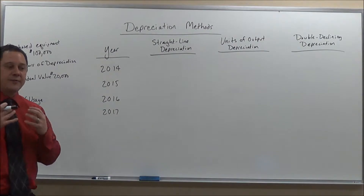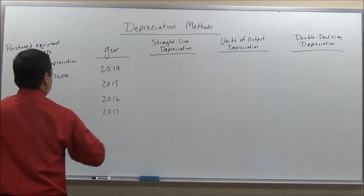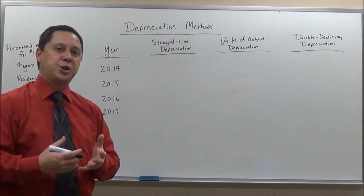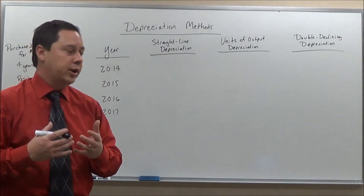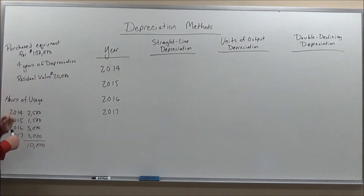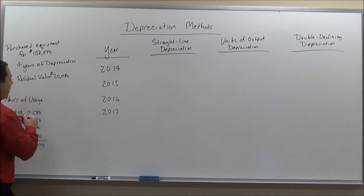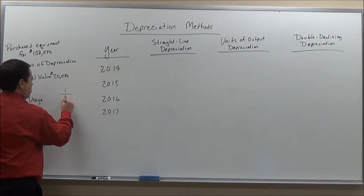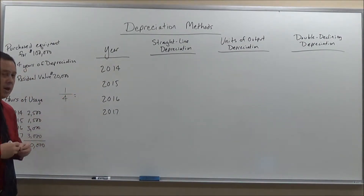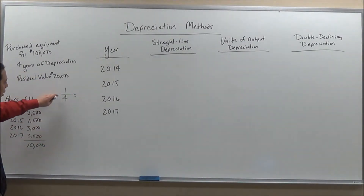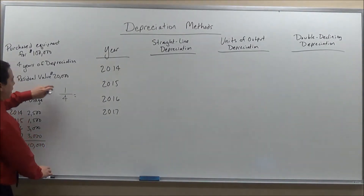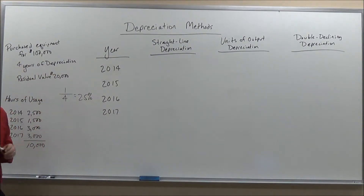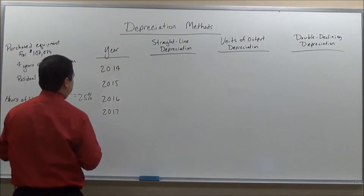Let's figure out the depreciation for the straight line method. One of the things I want to figure out is the percentage of depreciation per year. To figure that out, we take 1 over the number of years — so 1 over 4 — which gives us 25% per year.